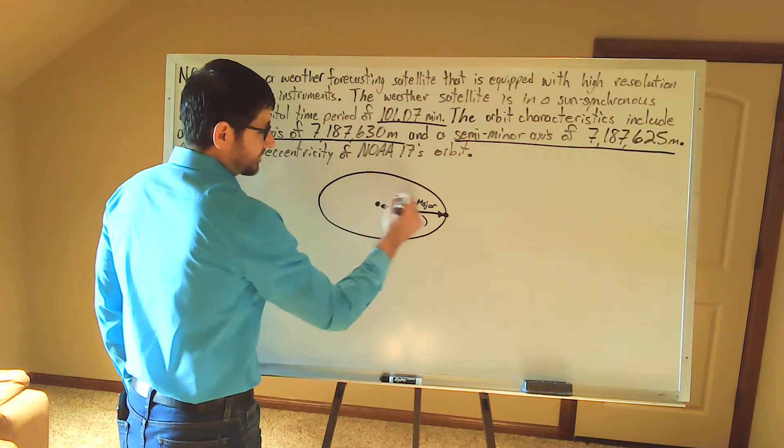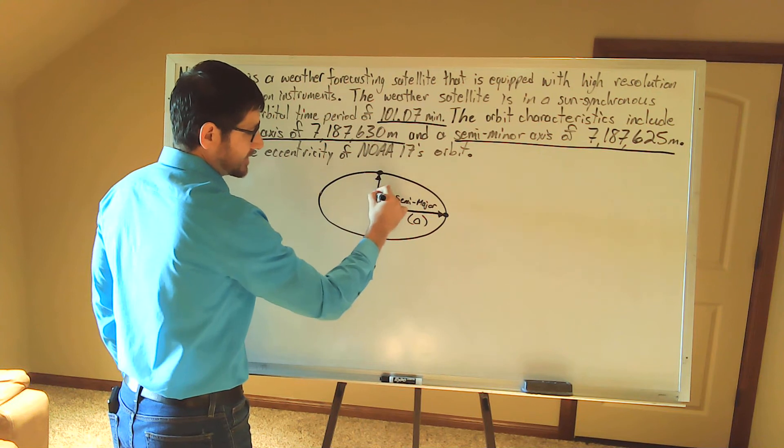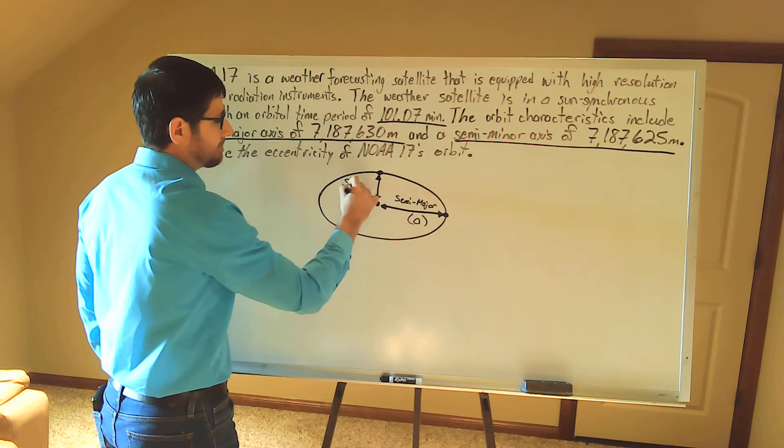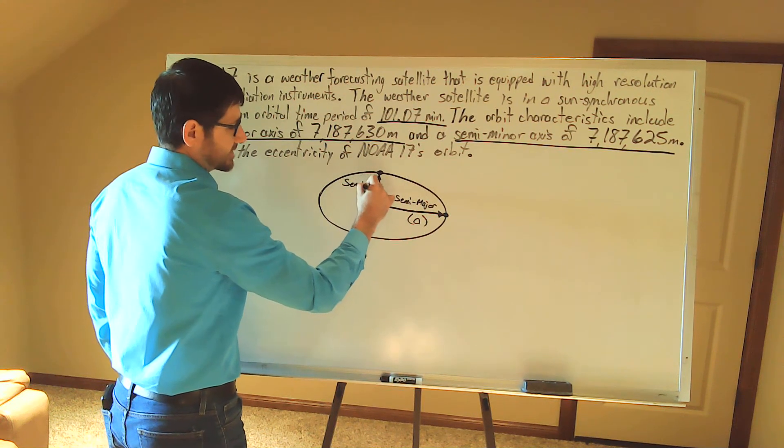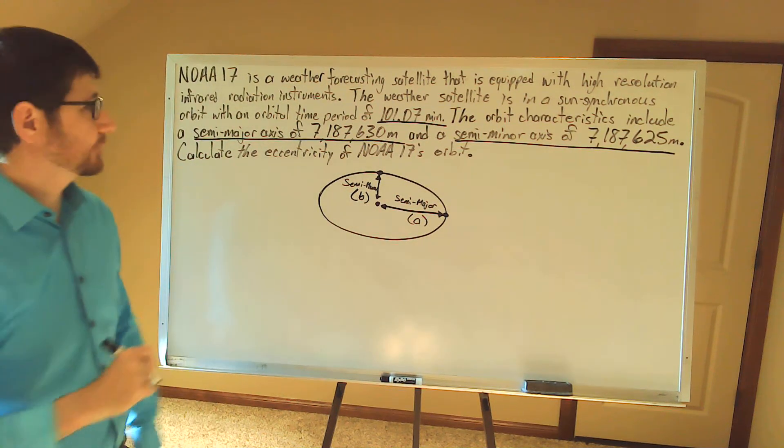From the center of my ellipse to this point here, this is my semi-minor axis, and it is identified by lowercase b.